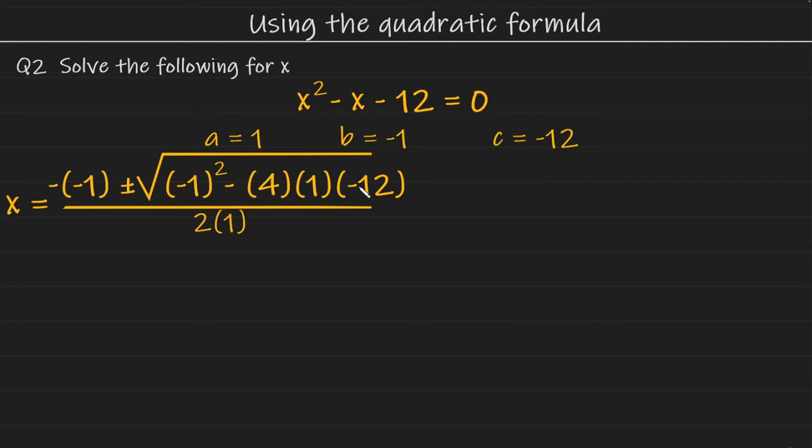Okay. So our next line of simplification is going to be a positive one here. Minus 1 to the power of 2 is just minus 1 times minus 1, which is positive 1.